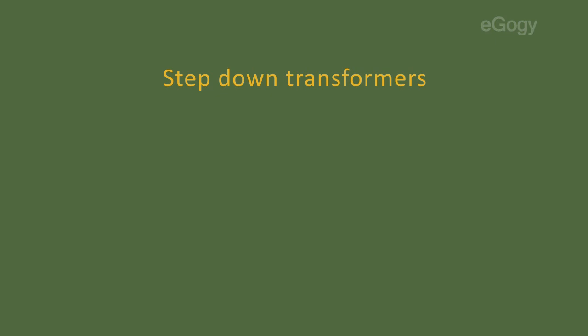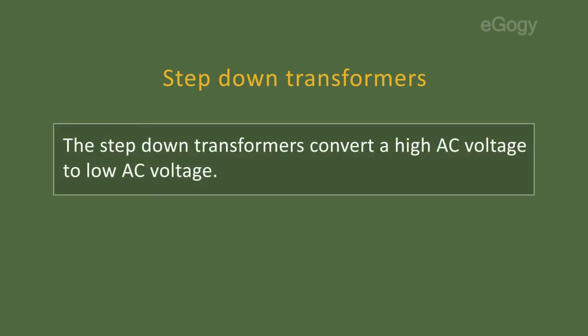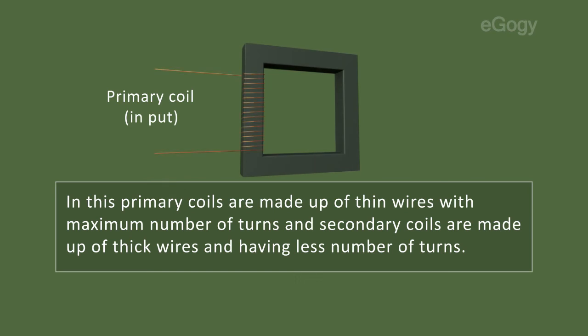Step-down transformers convert high AC voltage to low AC voltage. In this, primary coils are made up of thin wires with maximum number of turns, and secondary coils are made up of thick wires and having less number of turns.